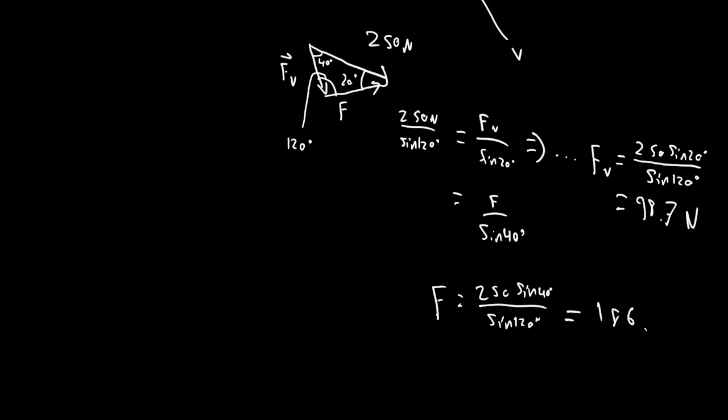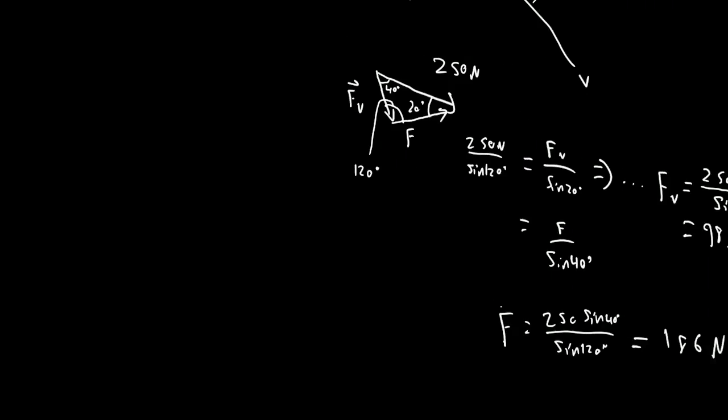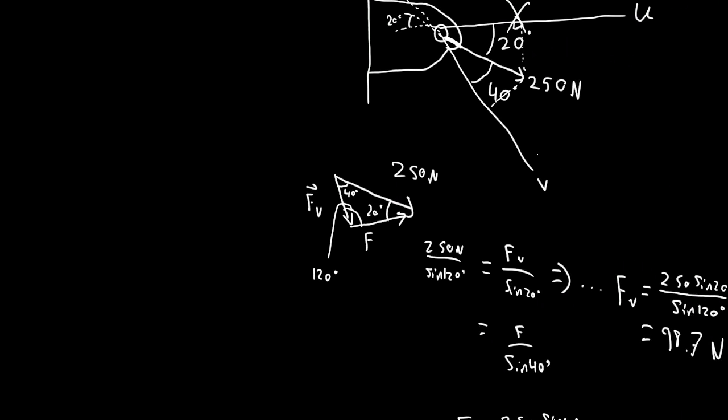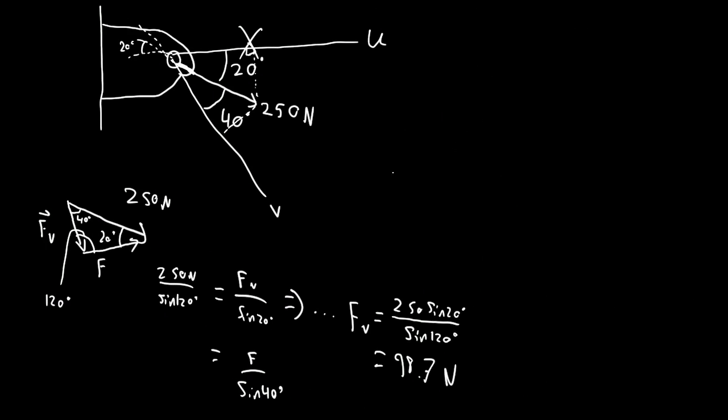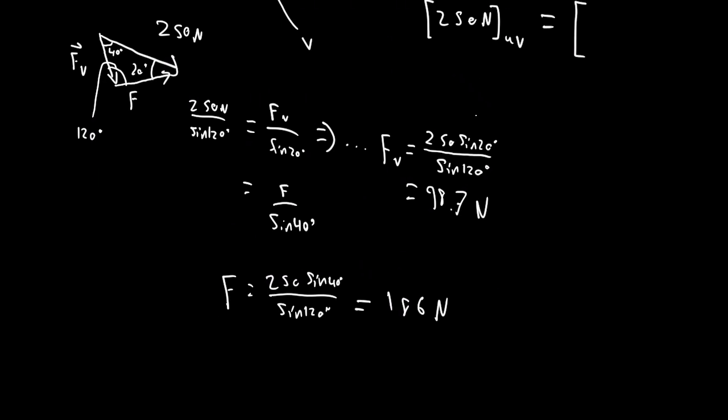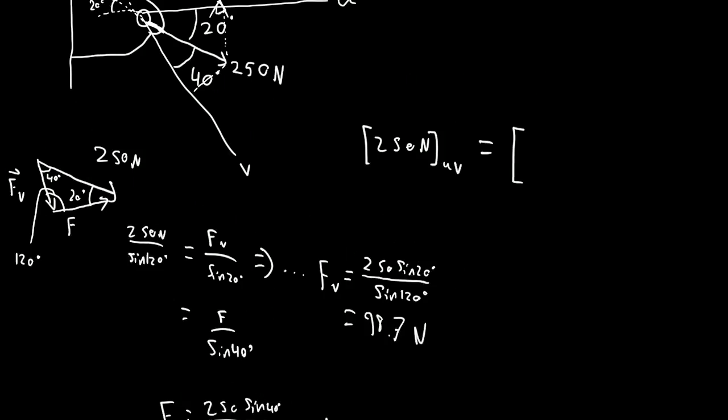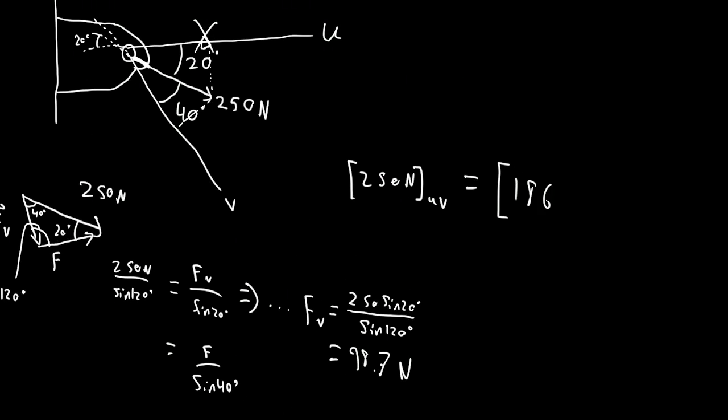So that gives us our components with respect to the UV coordinate axes, so we can say that 250 Newtons with respect to UV equals the U component, V component. So U is 186, V is 98.7 Newtons. So it's [186, 98.7] Newtons.